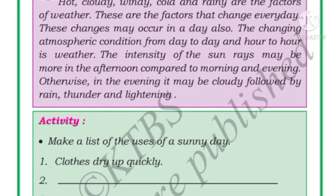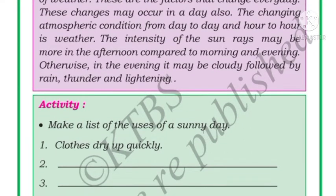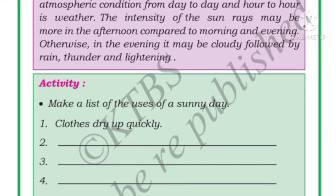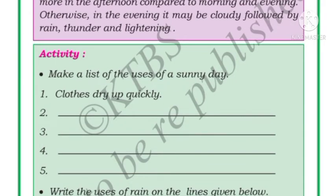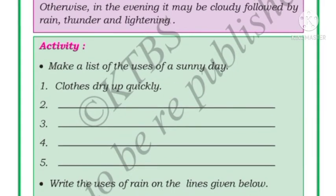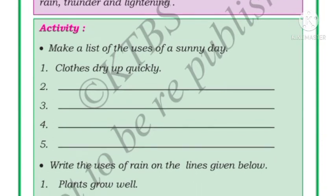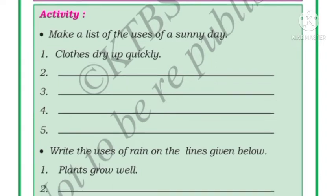Hot, cloudy, windy, cold, and rainy are the factors of weather. These are factors that change every day — these changes may also occur within a single day. The changing atmospheric condition from day to day and hour to hour is called weather. The intensity of sun rays may be more in the afternoon compared to morning and evening. In the evening it may be cloudy, followed by rain, thunder, and lightning.